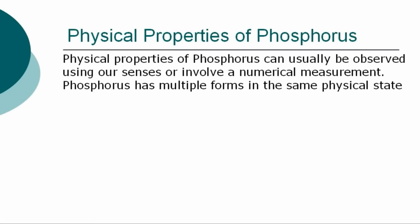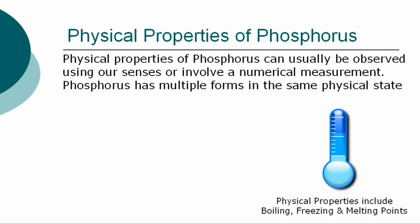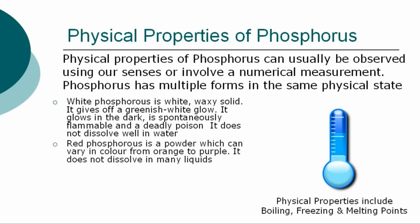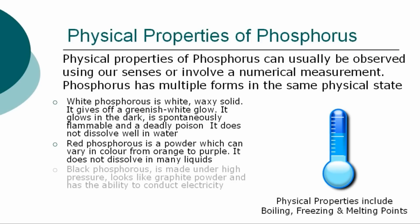The more specific physical properties of Phosphorus involve numerical measurements such as boiling, freezing, and melting points. White Phosphorus is a white, waxy solid. It gives off a greenish-white glow, glows in the dark, is spontaneously flammable when exposed to air, and is a deadly poison. It does not dissolve well in water. Red Phosphorus is a powder which can vary in color from orange to purple due to slight variations in its chemical structure, and does not dissolve in many liquids. Black Phosphorus is made under high pressure, looks like graphite powder, and has the ability to conduct electricity.